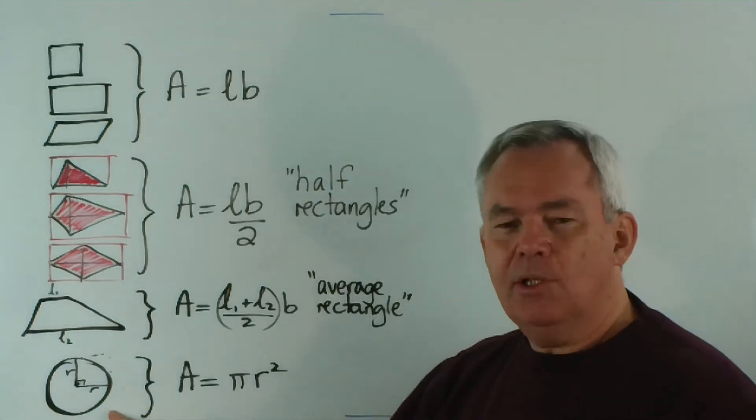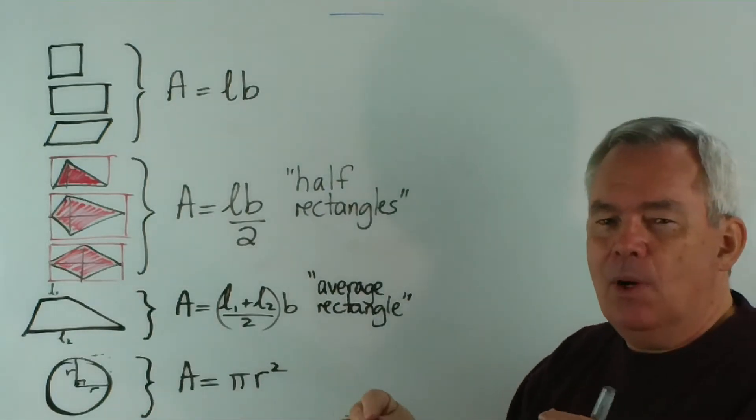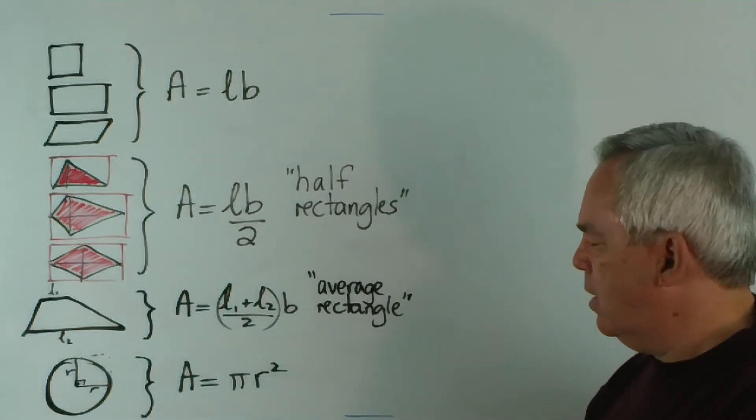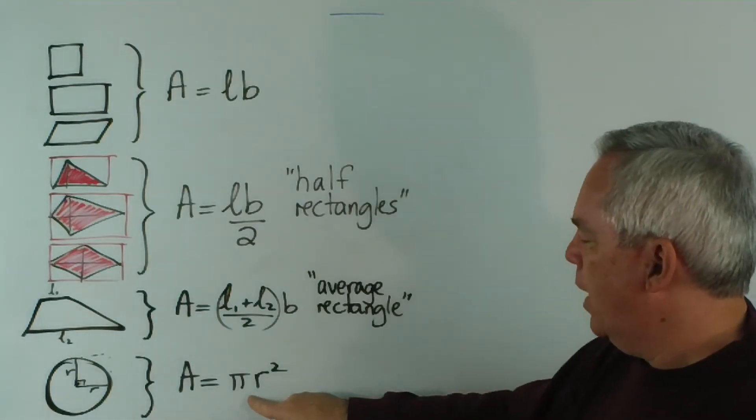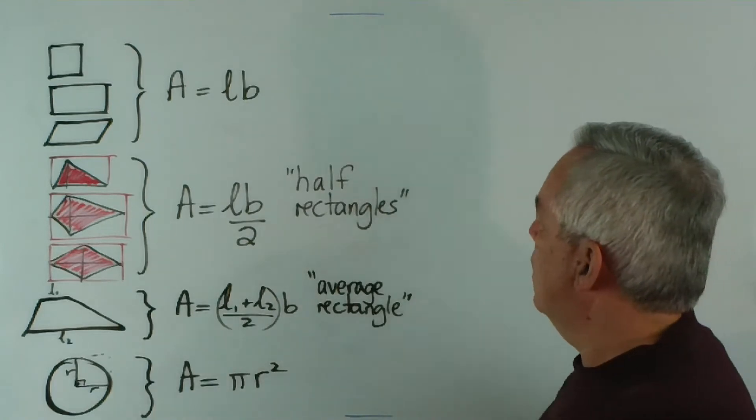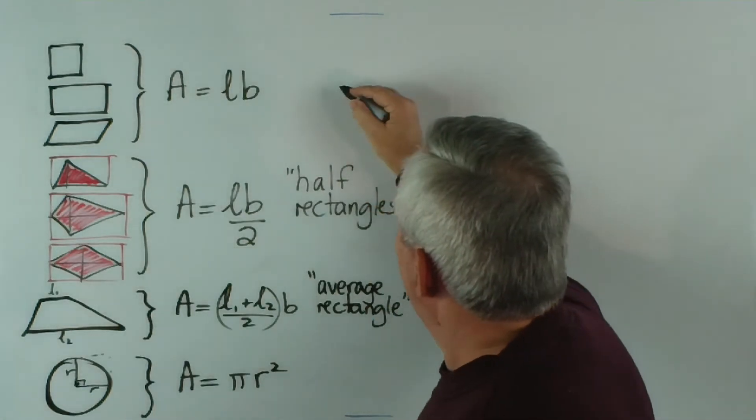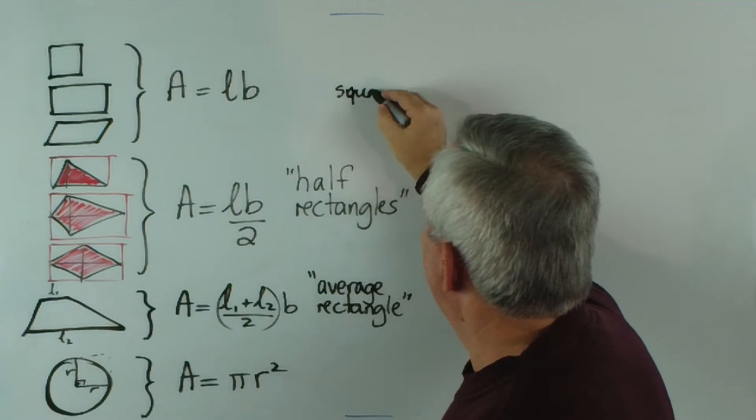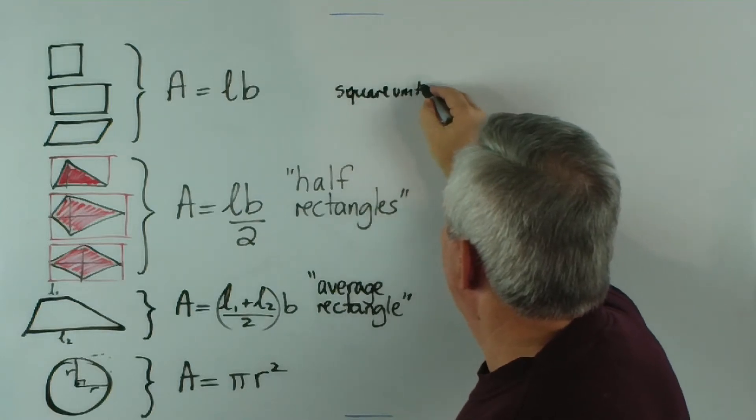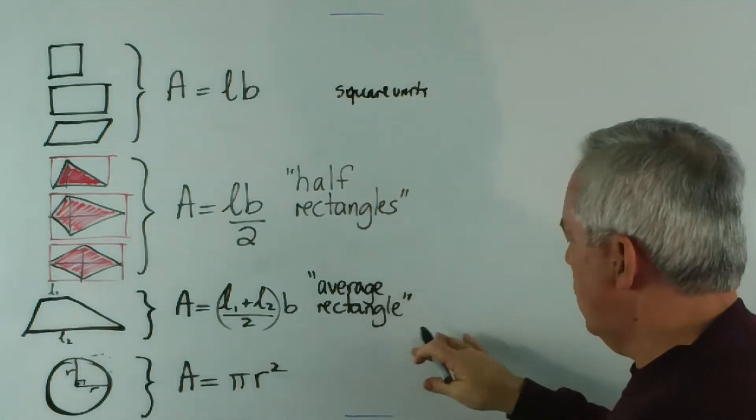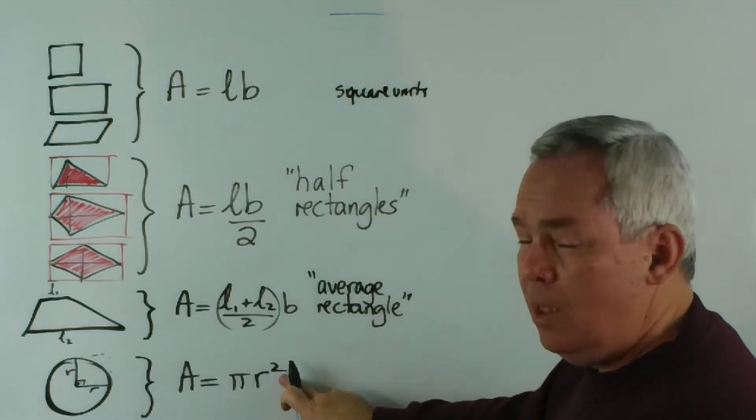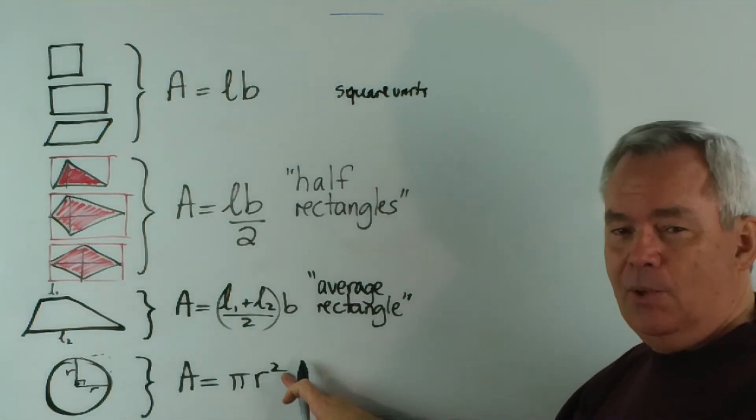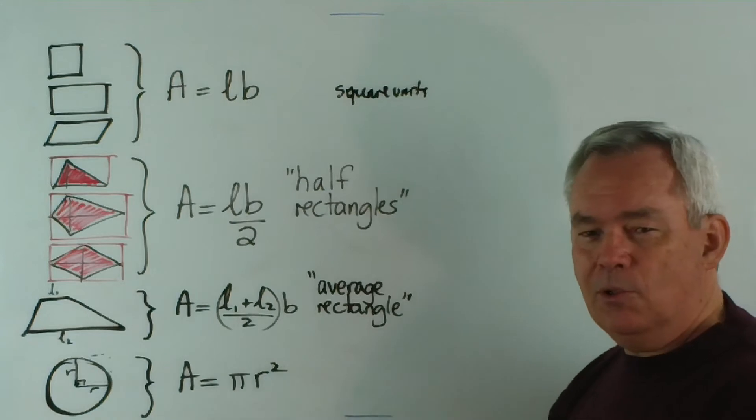And we saw that the circle itself can be divided up in a rather clever way into what is basically a rectangle. And we get the formula pi r squared. And all of these are written in square units. I'm not going to write square units on each. But r squared... square units, so don't get it confused with 2 pi r.